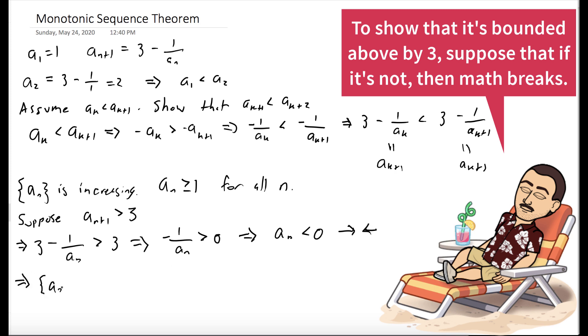So our sequence is bounded above by 3. And since we have an increasing sequence that's bounded above, the monotonic sequence theorem tells us that our sequence converges. It doesn't tell us what we converge to, though. So that's what we're going to do now.